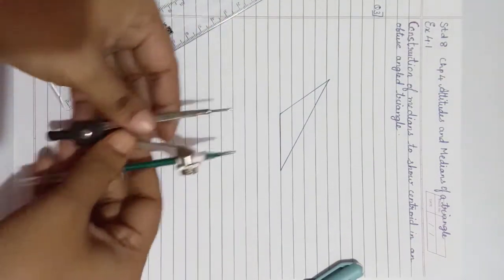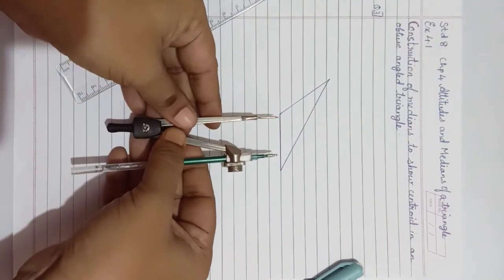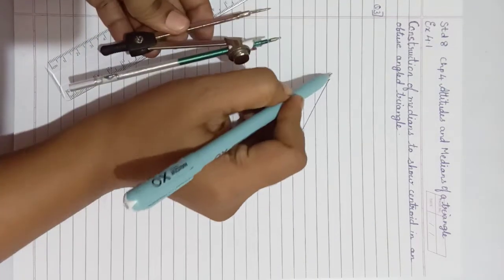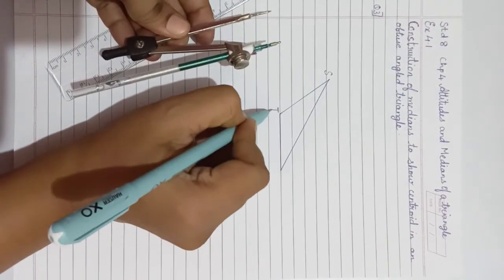Then we need to draw perpendicular bisector of each segment for the triangle S, T, V.